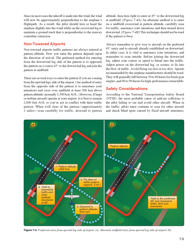Figure 7-4A: An alternate method is to enter on a midfield crosswind at pattern altitude, carefully scan for traffic, announce your intentions, and then turn downwind. Figure 7-4B: This technique should not be used if the pattern is busy. Always remember to give way to aircraft on the preferred 45-degree entry and to aircraft already established on downwind. In either case, it is vital to announce your intentions and remember to scan outside. Before joining the downwind leg, adjust your course or speed to blend into the traffic. Adjust power on the downwind leg, or sooner, to fit into the flow of traffic.